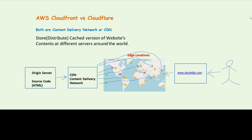CDNs basically work by storing and distributing cached versions of websites and keeping them at different servers around the world. These servers are called edge locations. The first point in a CDN network is called the origin server, which hosts the actual source code of the website — HTML code, etc. The CDN then loads the source code from the origin server, creates a cached version, and stores and distributes it across all the edge locations.